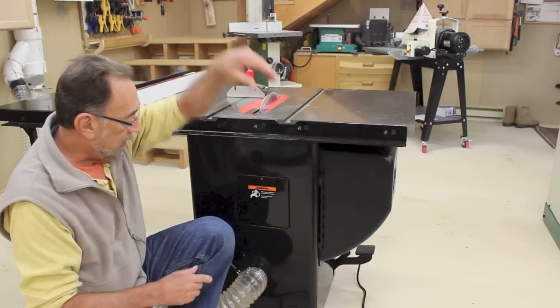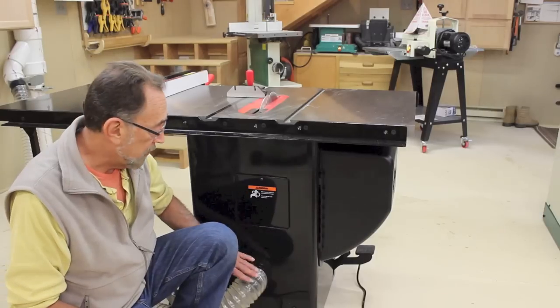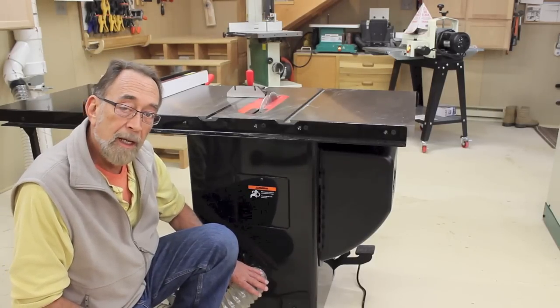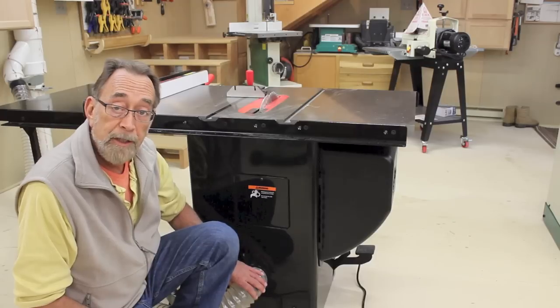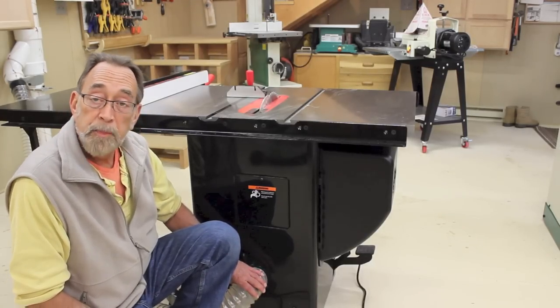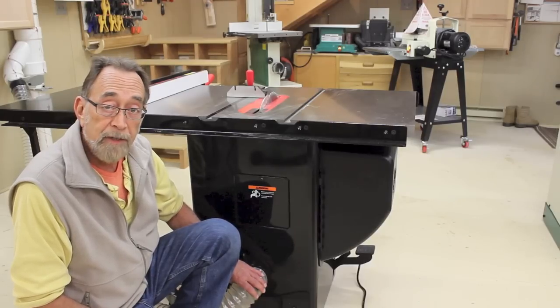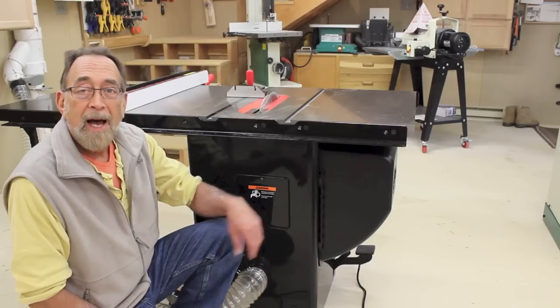And if, like on the saw stop, your dust collection port is in the back or power cables or other things, you'll need to make allowances under your outfeed table for these items. Make sure you have clearance. Other than that, that's pretty much it for the design considerations on an outfeed table. But, you know, I want more.